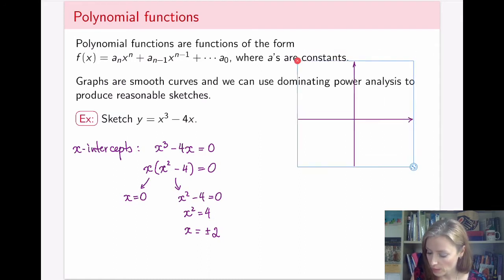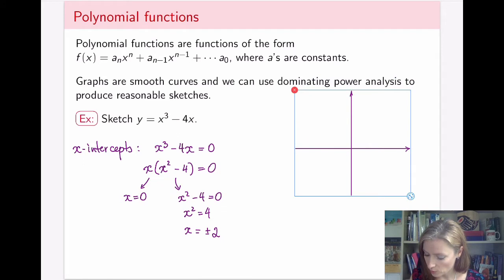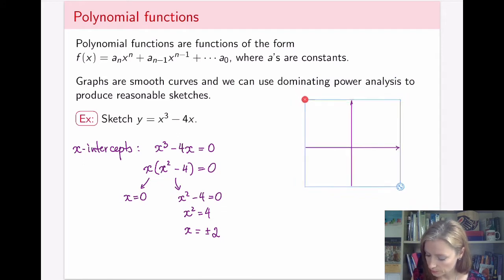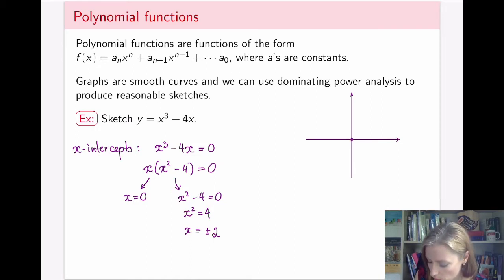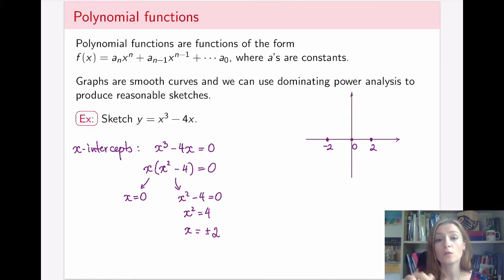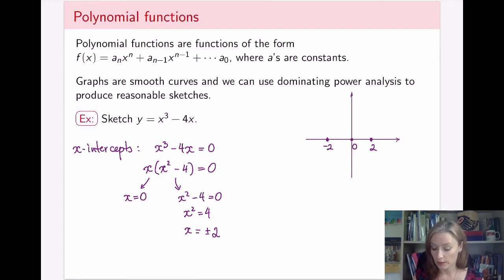Let's set up a graph. The x-intercepts are at 0, negative 2, and positive 2. These three points are already on our graph, and they will guide what the graph looks like.